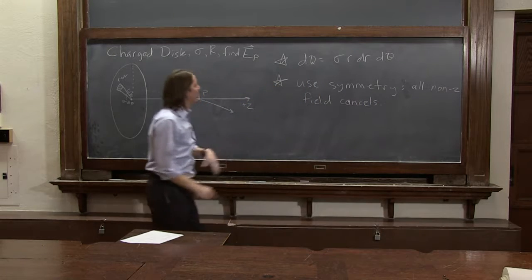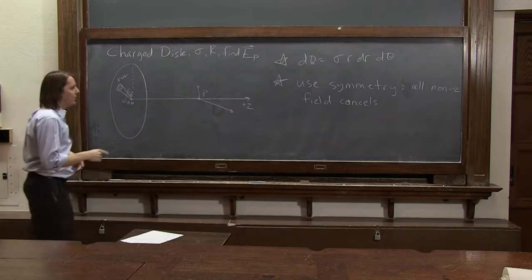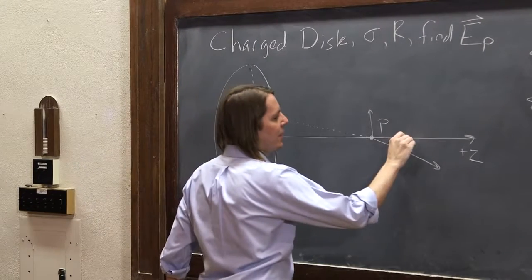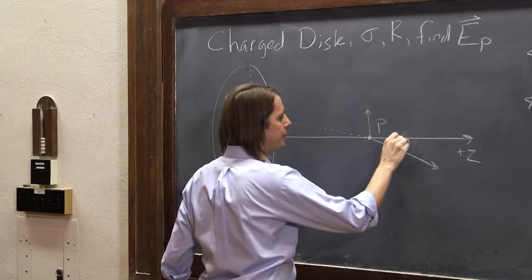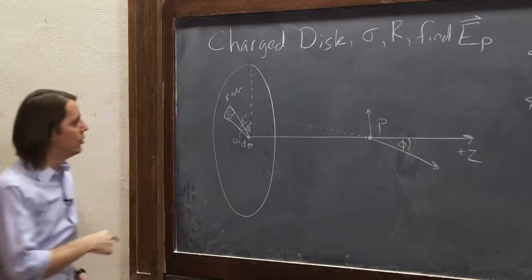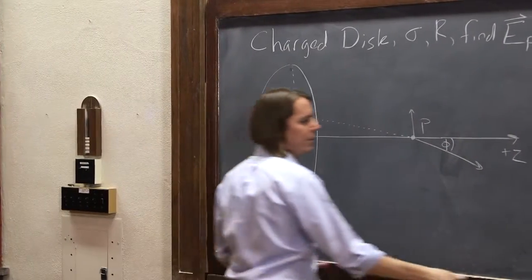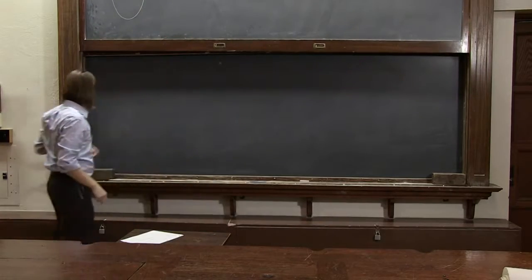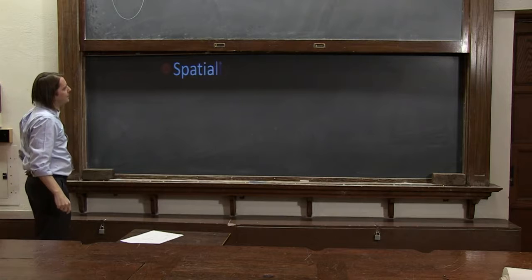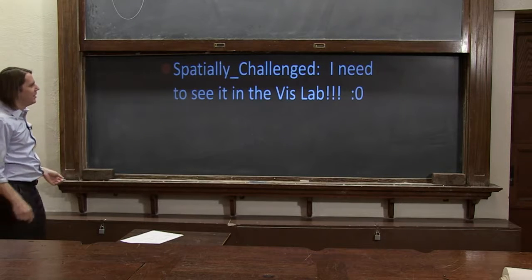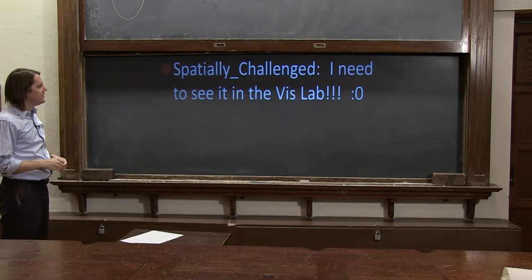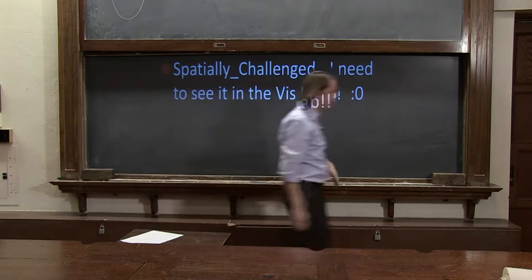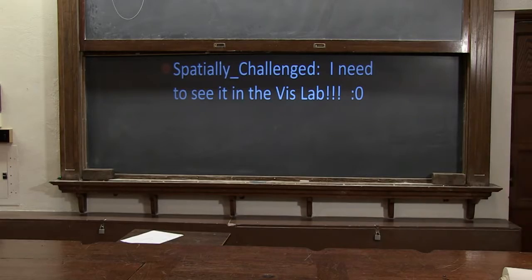So when we do this calculation, we only have to consider the z-component. So now, we need to go through and think about this angle right here. So we have a question here. Let me pull this up and see what we got here. Spatially challenged. I need to see it in the VizLab. Okay, so that was a very complicated drawing I did. Let's go look at it in the VizLab and make sure you get it.